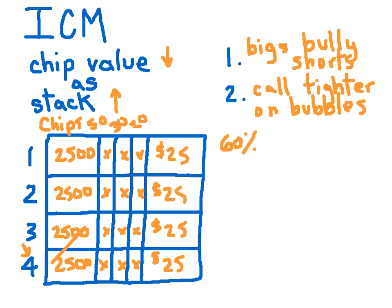So let's work out the chip EV. This is something you're probably already comfortable with. So 40% of the time you're going to lose, you're going to bust, you're going to have zero chips. So zero times 0.4, but then 60% of the time you're going to double up, so you'll have 5k. And you multiply this expression out, and the result is 3,000 chips. So we make 500 chips in the long run when we call with 60% equity in the hand.